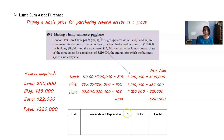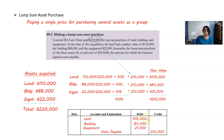Now we're going to journalize these things. We debit land for $105,000, building for $84,000, and equipment for $21,000. In this case, a note was signed rather than cash paid, so we credit note payable for $210,000. And that is a lump sum asset purchase.